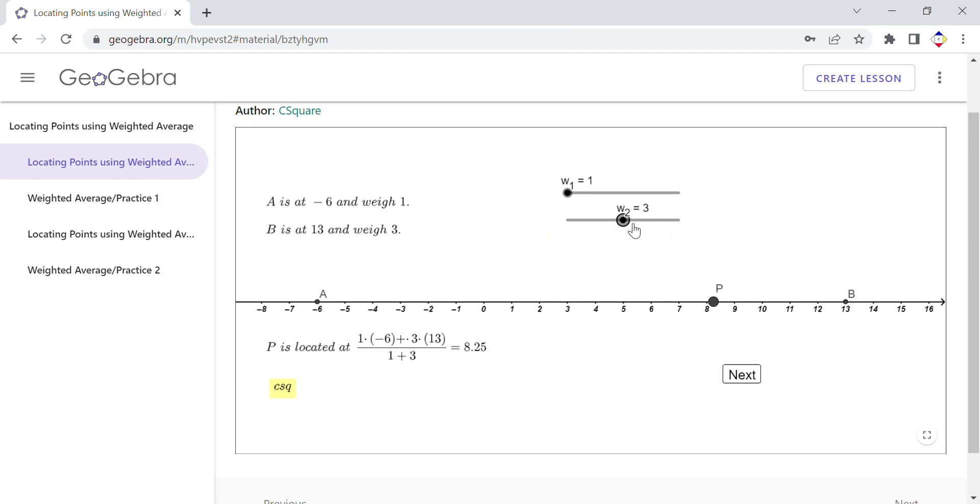You notice what happens with point P. The weight changes and it goes closer to B because the weight of point B is larger. You can keep B at 1 and then change the other one. You notice the same thing. By the way, when the weight is 1 and 1, you notice that point P is in the middle.